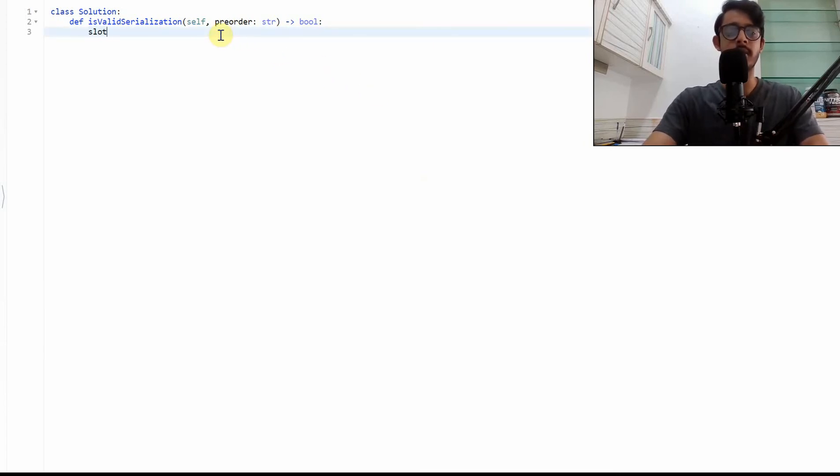So let's start from slots, which is going to be set to one. This is the number of available slots and we'll iterate over each node in preorder.split by comma, the input given to us is this format, so we'll just split it out with commas, have a big list of nodes. That's it.